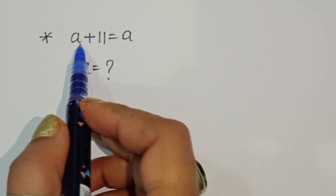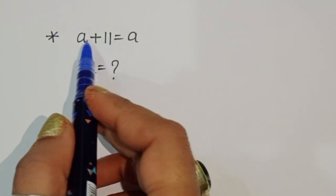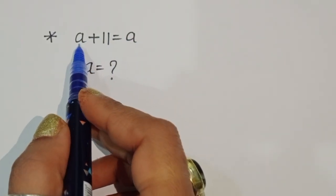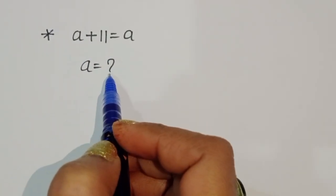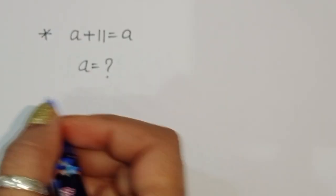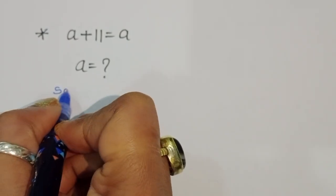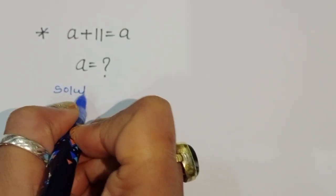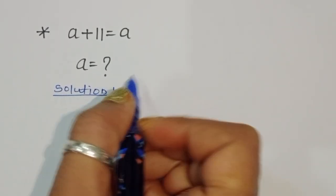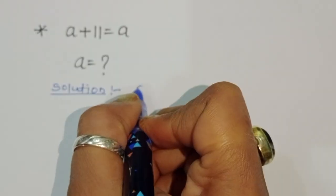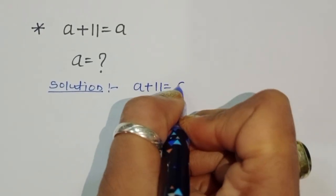The question is: given √(a+11) = √a, we have to find out the value of a. Let's see the solution.